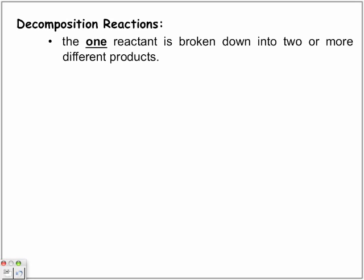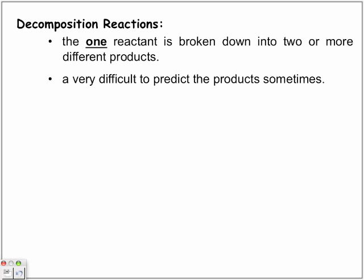So, decomposition reactions. The one reactant is broken down into two or more different products. Very difficult to predict the products sometimes. So, it's not going to be as easy to identify the final result. We have the X and Y that's already bonded together and we're going to try to separate them as just X and Y.